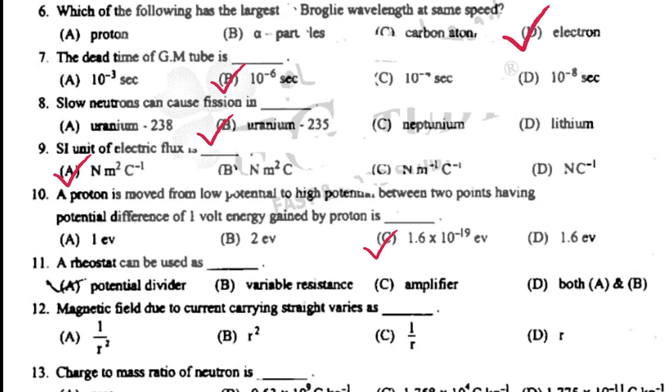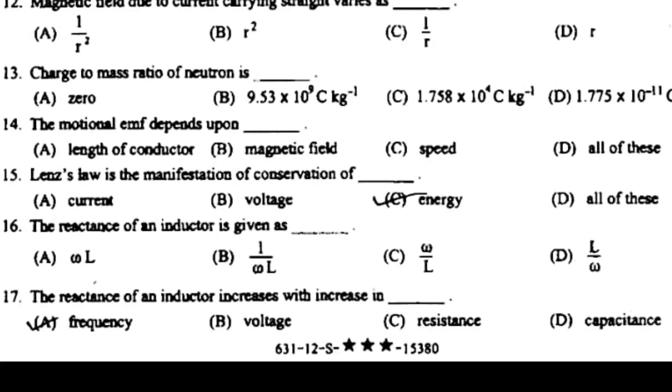A potentiometer can be used as a potential divider. Magnetic field due to current carrying straight wire varies as 1 over R. Charge to mass ratio of neutron is 0.